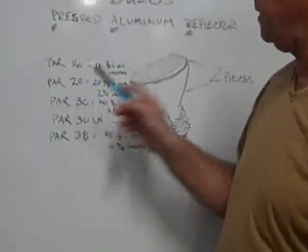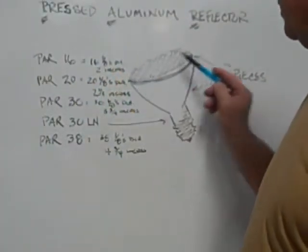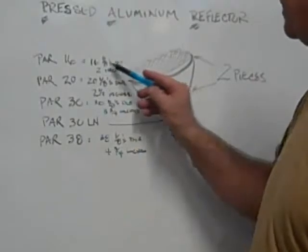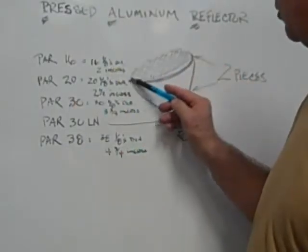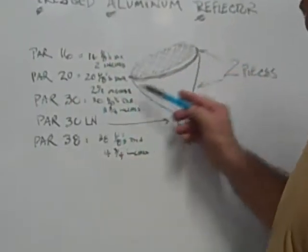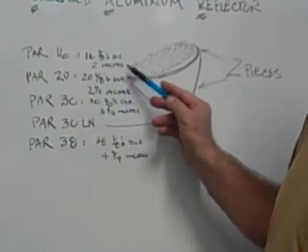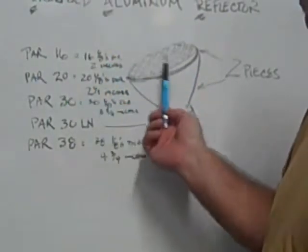Now a PAR 16, the diameter is 16 eighths of an inch across the face of the bulb. So 16 eighths is equal to two inches. So a PAR 16 would be two inches.